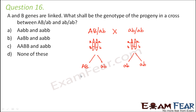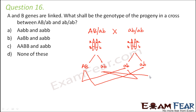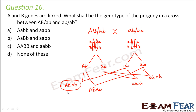So what kind of progeny will there be? The possibilities are: capital AB / small ab, and small ab / small ab. So there are two genotypes in the progeny: capital A capital B slash small a small b, and small a small b slash small a small b. Therefore, option B is the right answer.